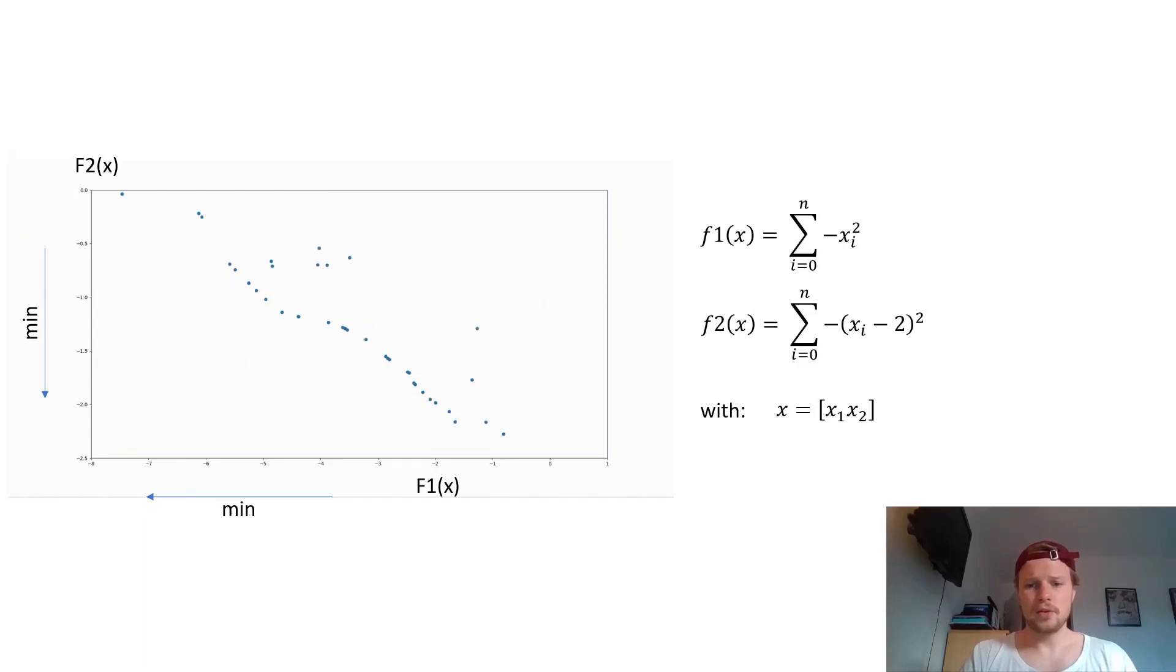And F2 on the other side is quite similar, but instead of squaring Xi and then taking the negative, we first subtract Xi to 2, square it, and then take the negative and take the sum of all of them. So what I also have is, like always, I have borders for X1 and X2. To keep it simple, my borders were chosen between 0 and 2 for X1 and X2.